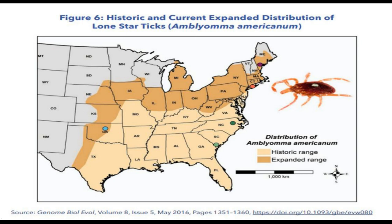This map shows the historic distribution of the lone star tick in the southern states from southeast Texas to Florida and up into the southern states, with the darker brown areas showing where it has migrated over the past decade. In New England — Massachusetts and the Rhode Island area — ten years ago we never saw HME because we never saw the lone star tick there. These are emerging infectious diseases in terms of more cases every year, more geographies, and more different germs.